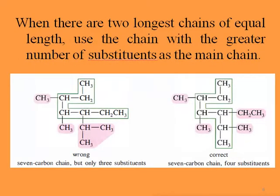As you see in these two pictures, we have seven-carbon chains, so we find the largest chain — the largest chain is always used as the main chain. In this case we have a seven-carbon chain. But sometimes when there are two largest chains of equal length, we need to use the chain with the greater number of substituents as the main chain. On the left-hand side we have a seven-carbon chain with only three substituents, while on the right-hand side we have a seven-carbon main chain with four substituents, so the right-hand side is the best approach.